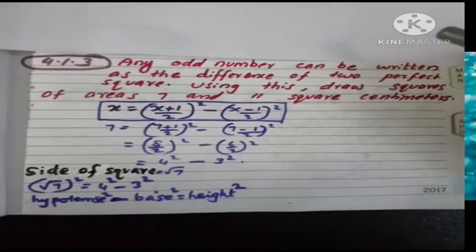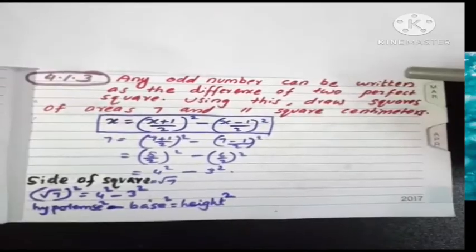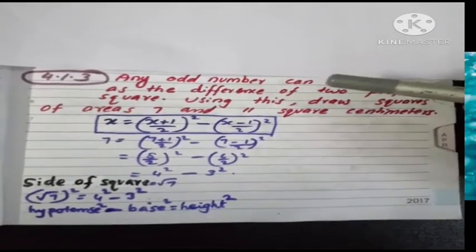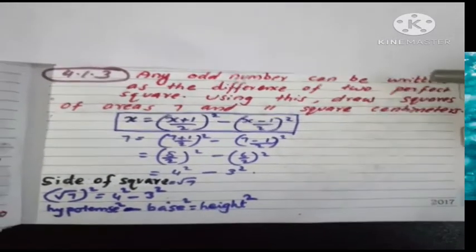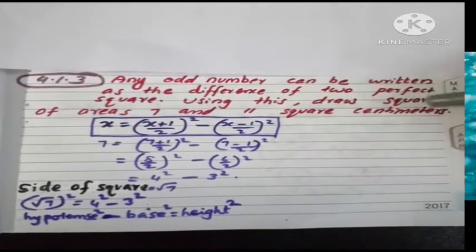Hi children, next question. Any odd number can be written as the difference of two perfect squares. Using this, draw square of area 7 and 11 square centimeter.